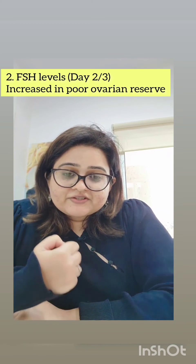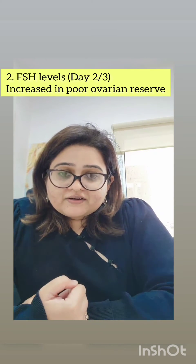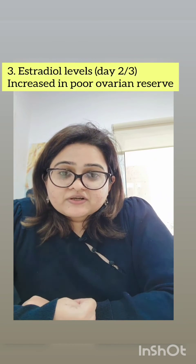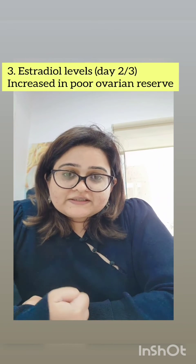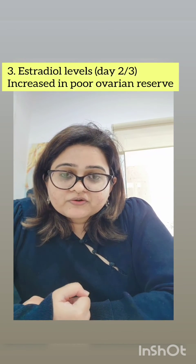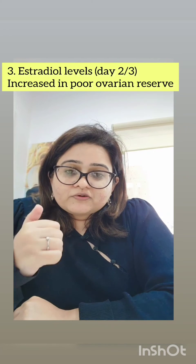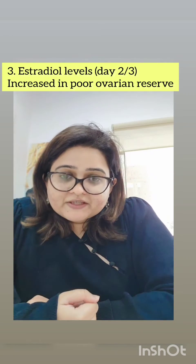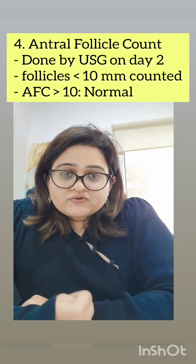The second test is FSH levels, done on day 2 or day 3 of the cycle. FSH levels more than 10 are an indicator of poor ovarian reserve. The third test is serum estradiol levels, also done on day 2 or day 3, which will appear higher in women with poor ovarian reserve because high FSH leads to recruitment of more follicles and a higher estrogen level.